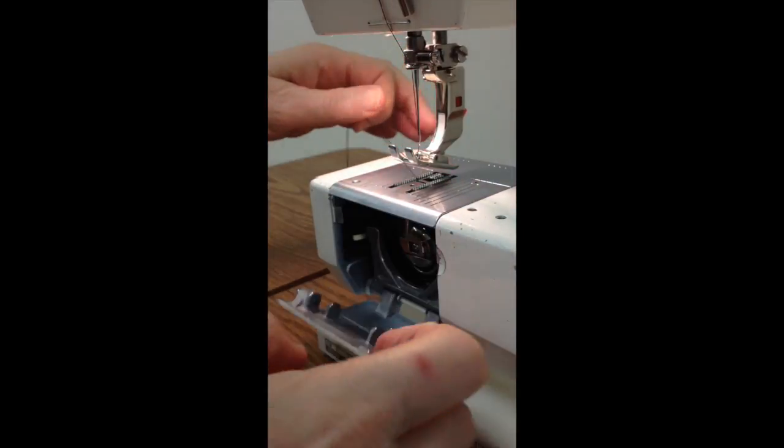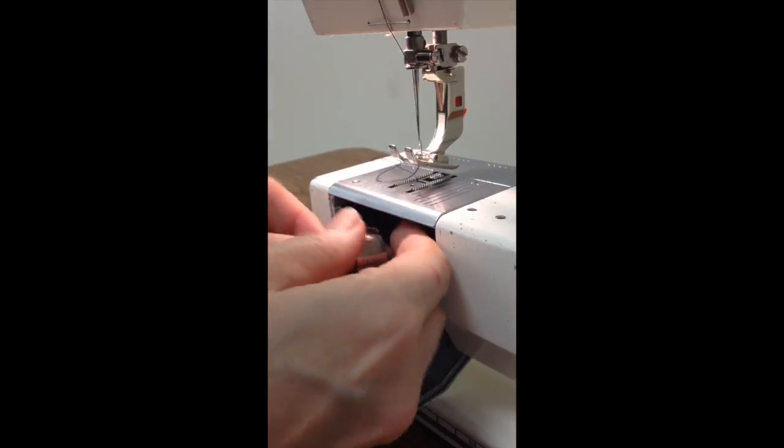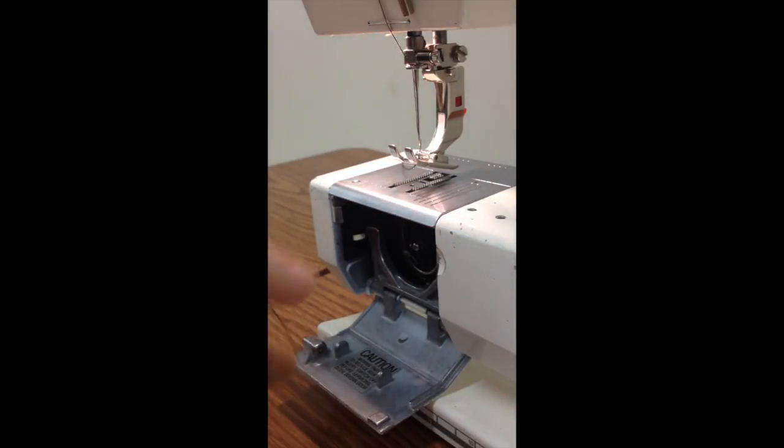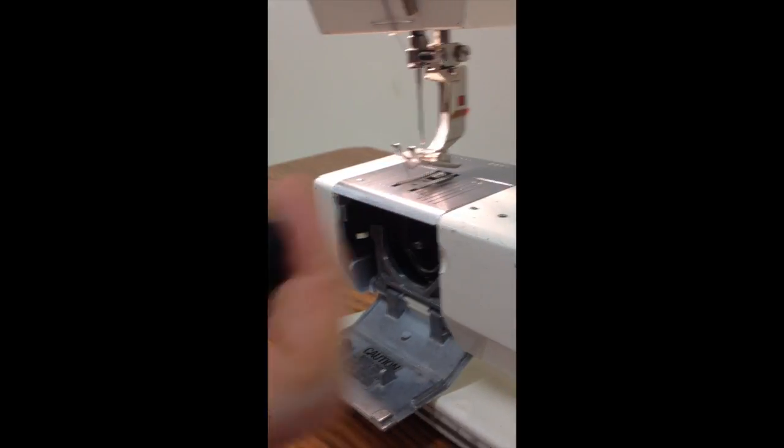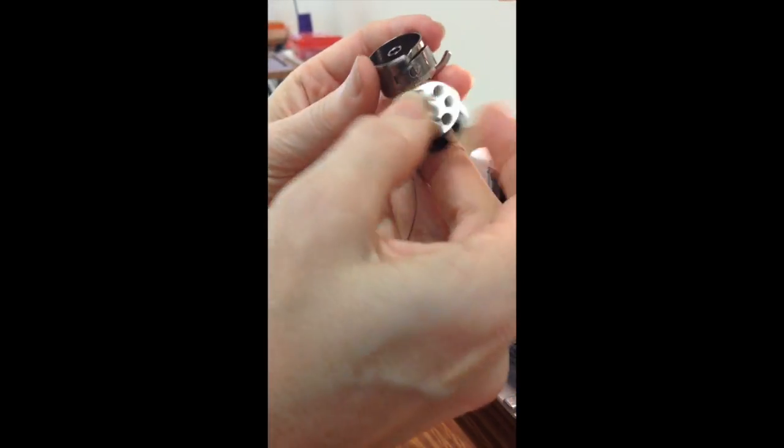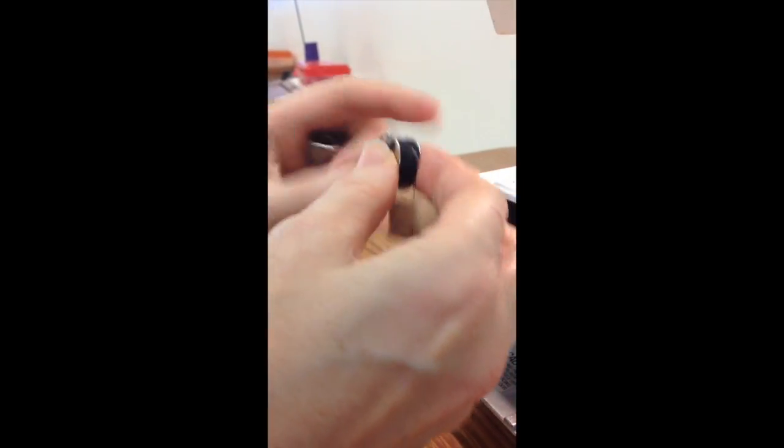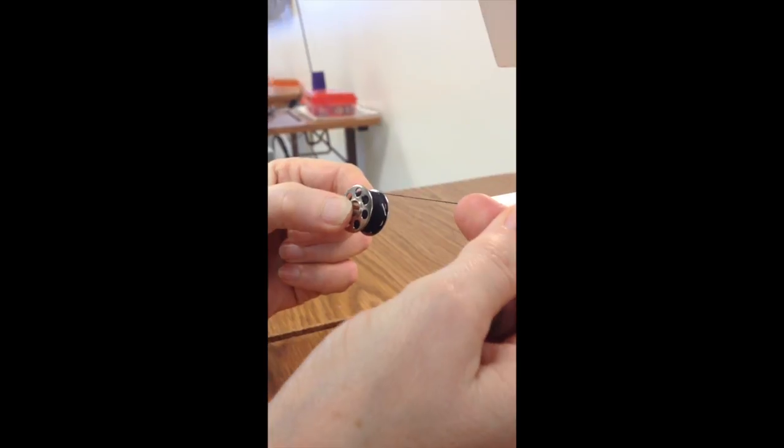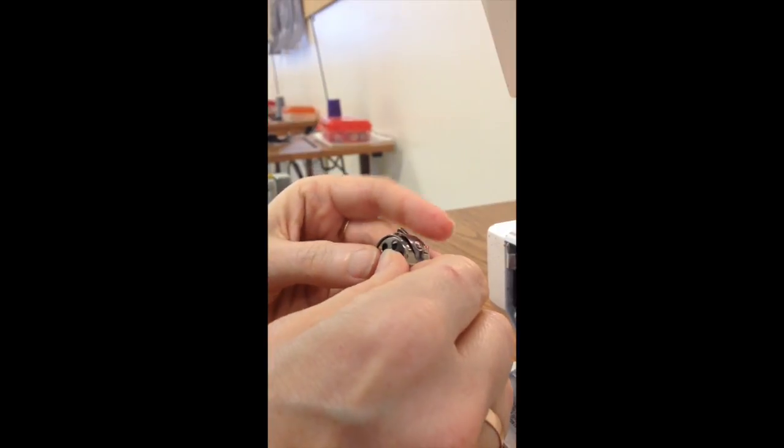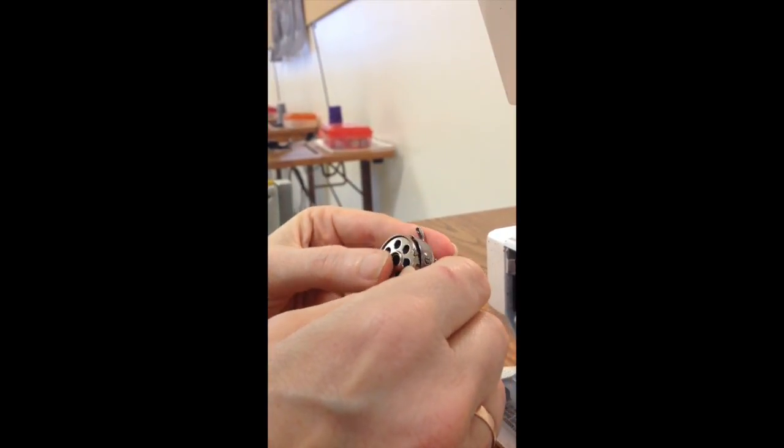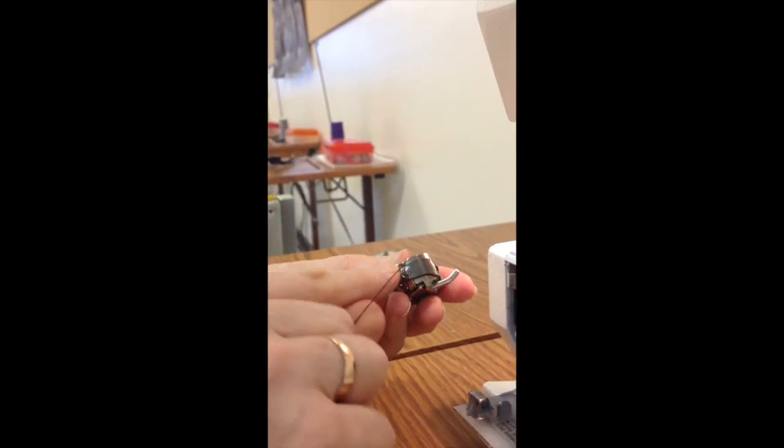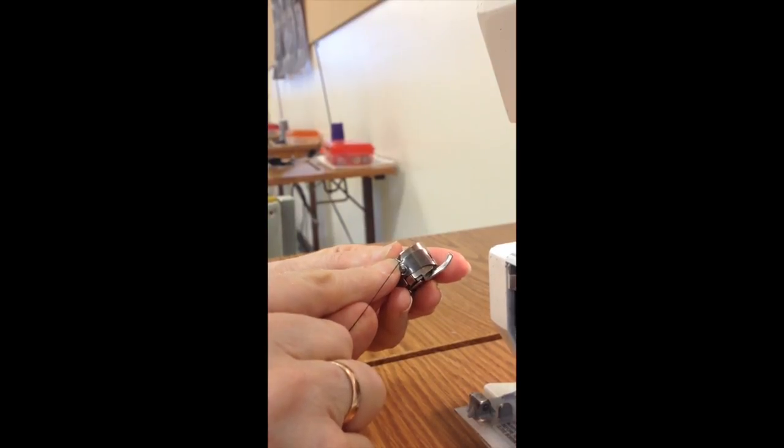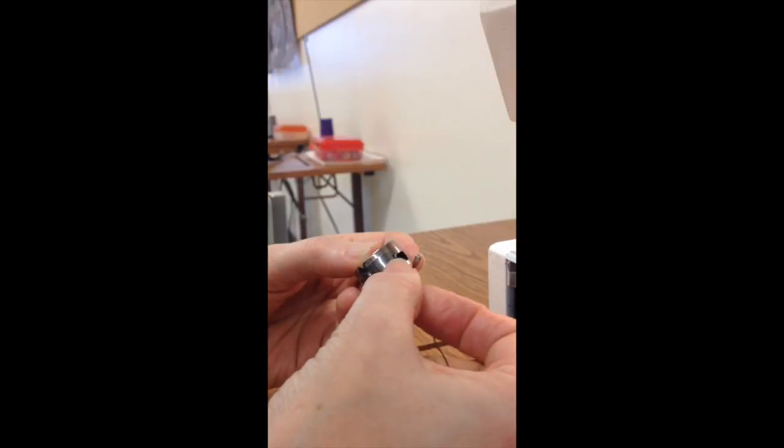To check the bobbin tension you need to get the bobbin casing and the bobbin out of the housing. We want to make sure that the bobbin has the thread coming off of the top. Remember it's supposed to look like a six. And make sure it's well seated in the bobbin casing to make sure that the bobbin thread is going through the slit and under that tension plate right here.